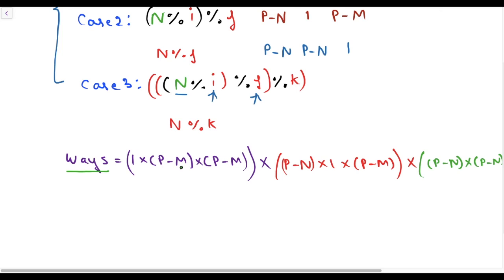Now, our task is to find the value of m — the maximum possible score. The maximum possible score is the floor of (n − 1) divided by 2.